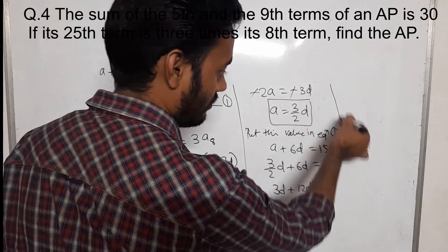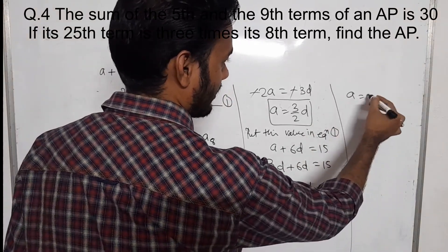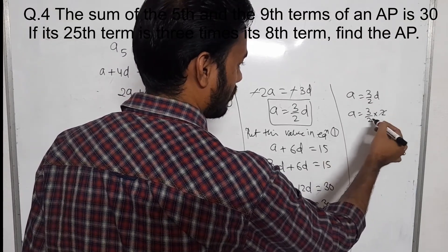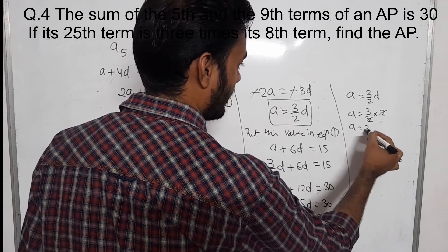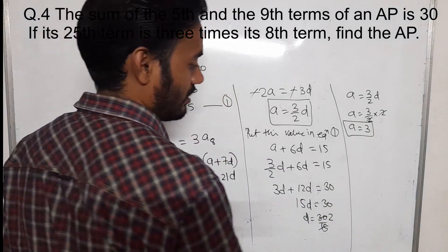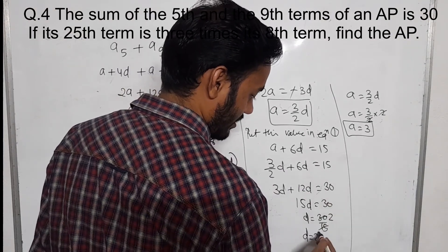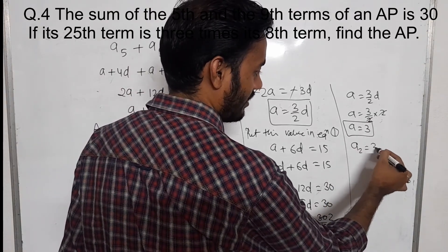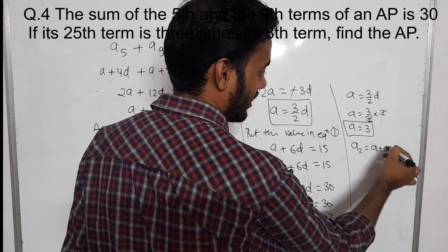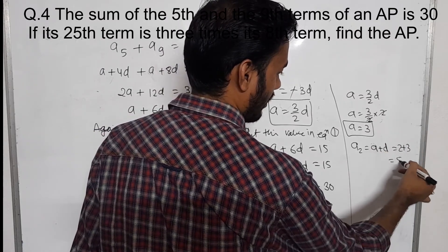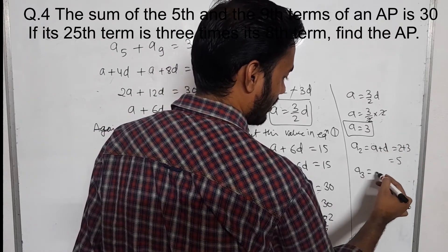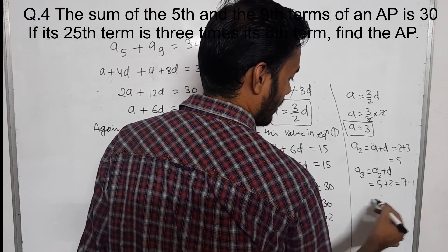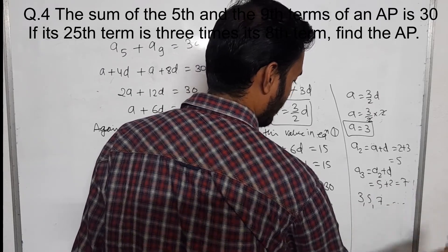Putting D equals 2 back into A equals 3 by 2D: A equals 3 by 2 into 2. 2 and 2 cancel, so A equals 3. The second term is A plus D equals 3 plus 2 equals 5. A3 is A2 plus D, that is 5 plus 2 equals 7, and so on. So the AP will be 3, 5, 7 and so on.